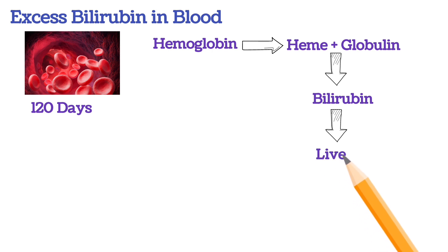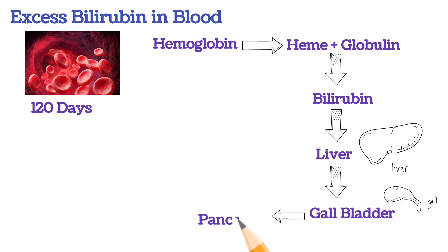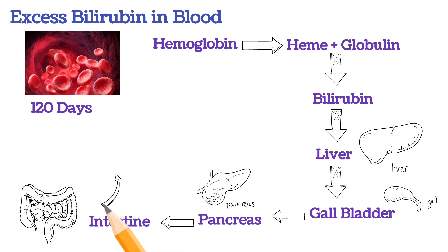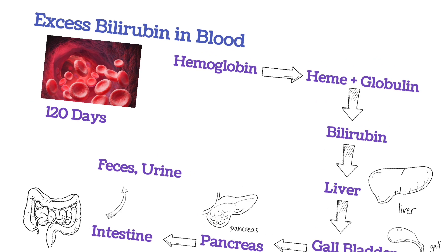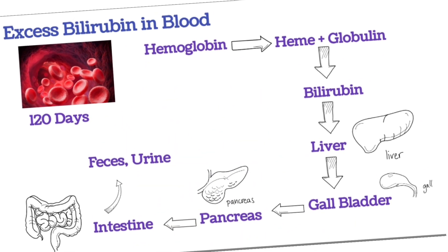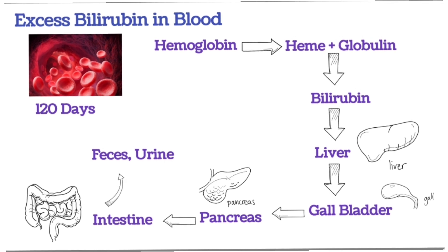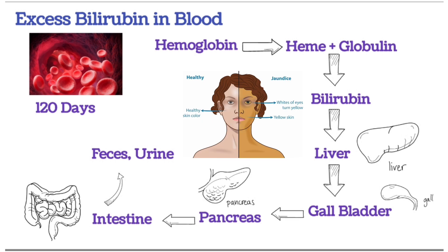From the liver, it enters the gallbladder, and from the gallbladder, it enters the pancreas and intestine, and through the feces and urine, it expels out from the body. But in certain conditions, this bilirubin does not get out from the body and results in excessive accumulation, resulting in jaundice.